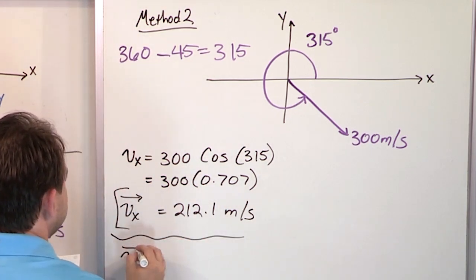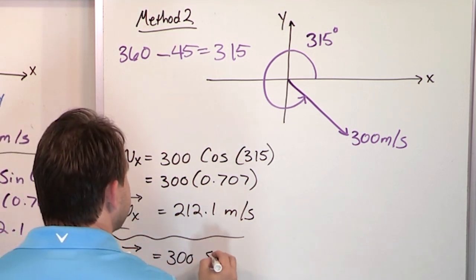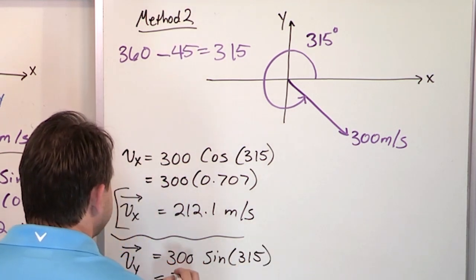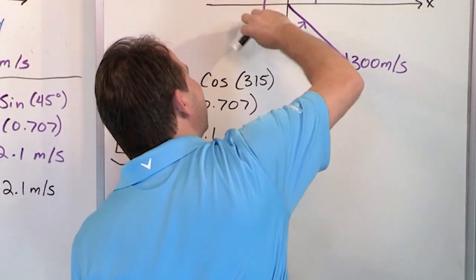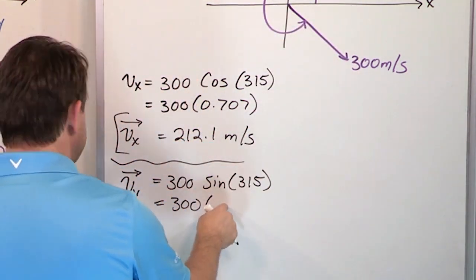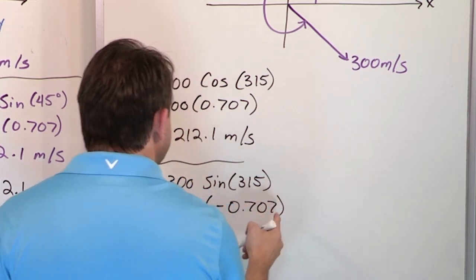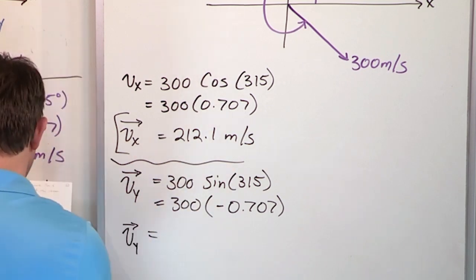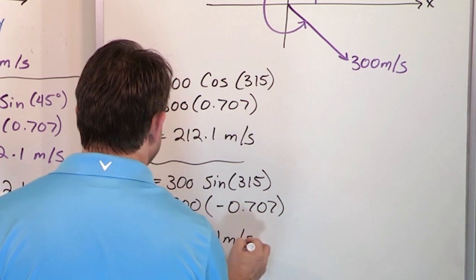What are you going to get for Vy? You're going to have 300, but you're going to multiply times the sine of what? 315, same angle. And so what you're going to get is 300. When you take 315, the calculator knows 315 is all the way down here. So it's going to give you the correct sign for this. And you're going to get negative 0.707. So when you multiply these together, you'll get Vy is equal to negative 212.1 meters per second.